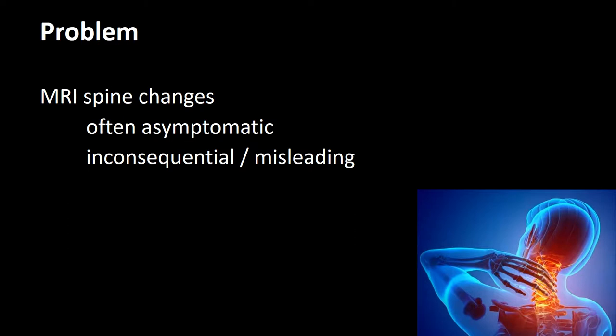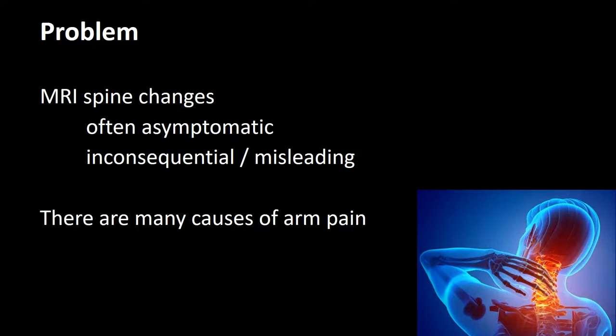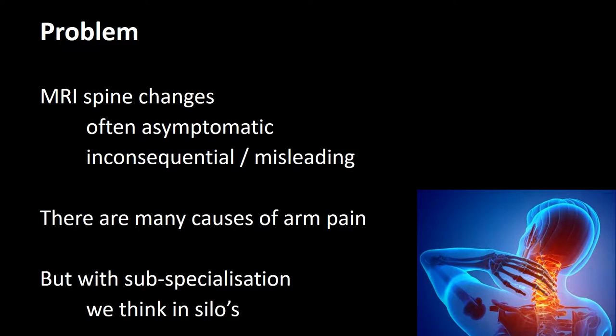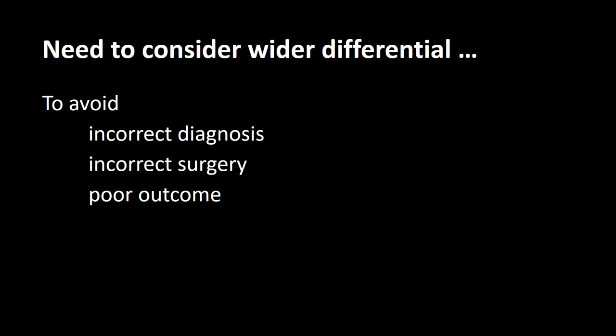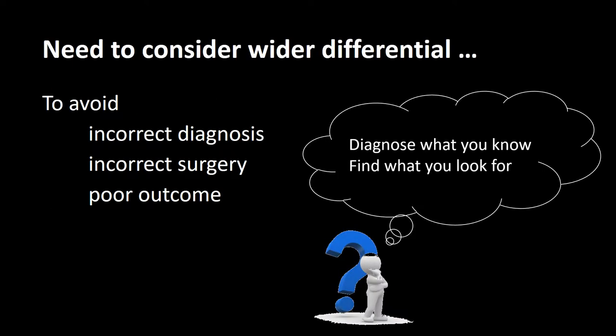In addition, MRI spine changes are often asymptomatic and in fact inconsequential and misleading. There are many causes of arm pain, but with our subspecialization we think in silos. We need to consider a much wider differential to avoid making an incorrect diagnosis, which will lead to incorrect surgery and a poor outcome. As we diagnose what we know and find what we look for, we need to improve on both these fronts.